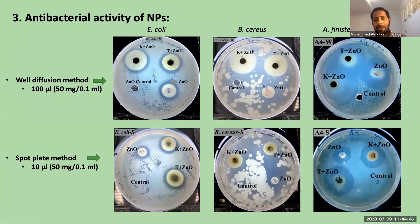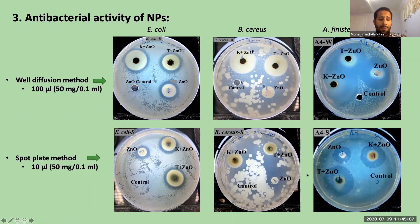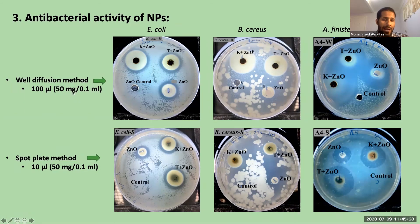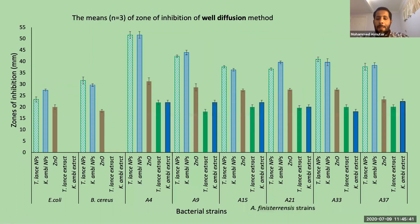Now let's move to the antibacterial activity of the nanoparticles by well diffusion method and spot plate method. You can see a clear large zone of inhibition, especially against Aliivibrio strains in both methods — here in well diffusion and here in the spot plate method. This is the zone of inhibition for Aliivibrio A4 as a representative. In well diffusion, we placed 100 µL with a nanoparticle concentration of 15 µg per 0.1 mL in each well. This graph shows the mean zones of inhibition for the well diffusion method.